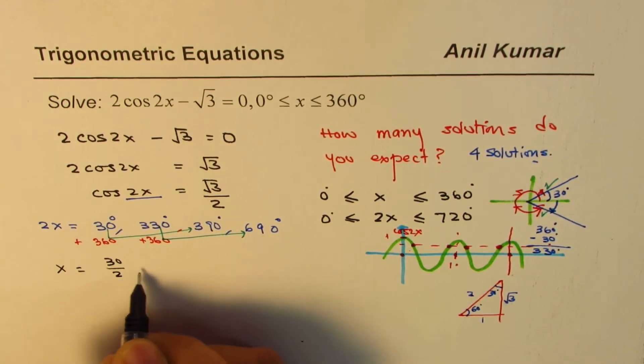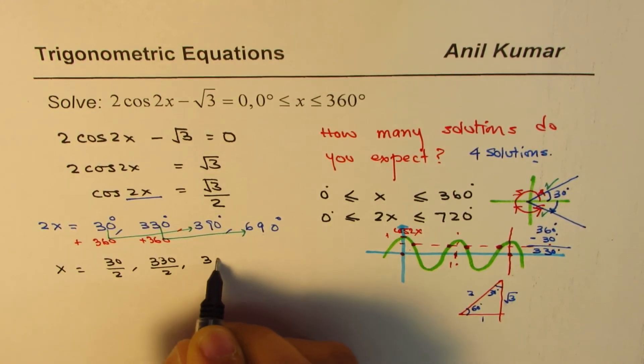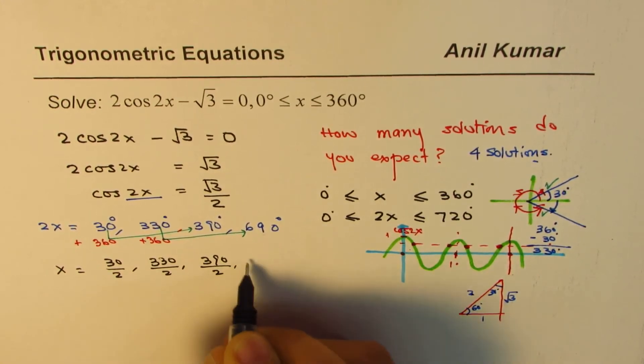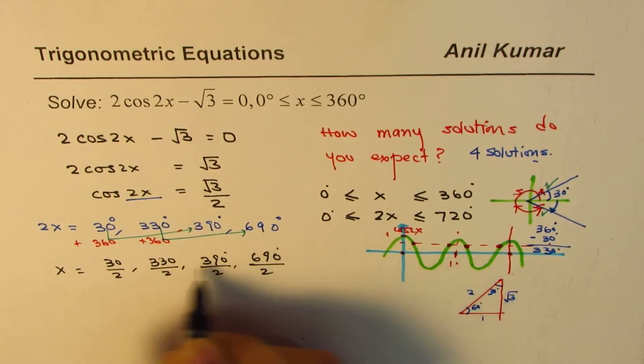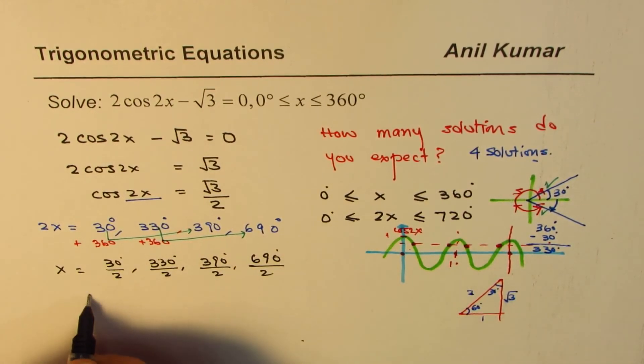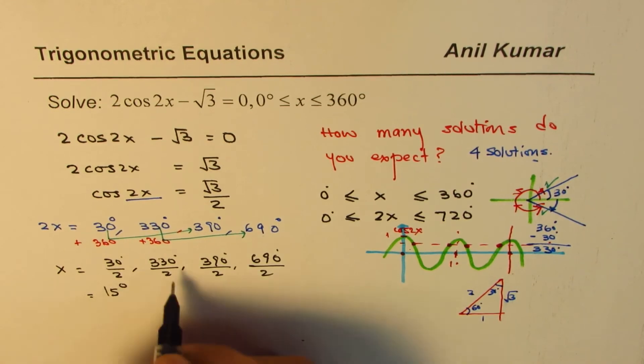So you have 30 divided by 2, 330 divided by 2, 390 divided by 2, and 690 divided by 2, all in degrees.